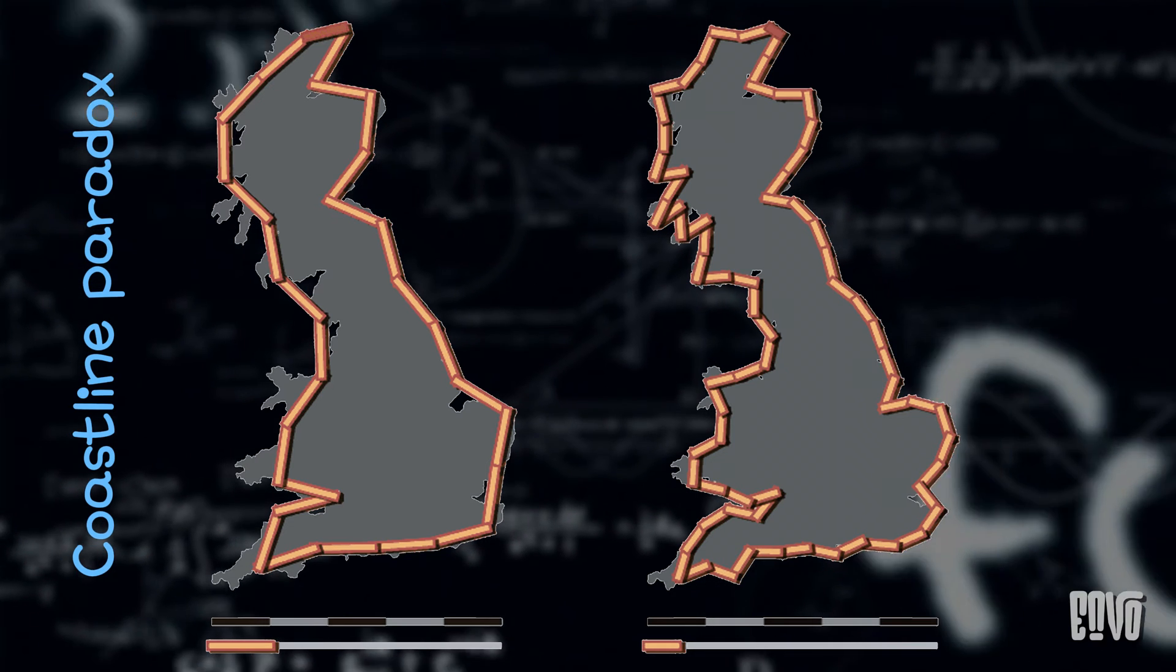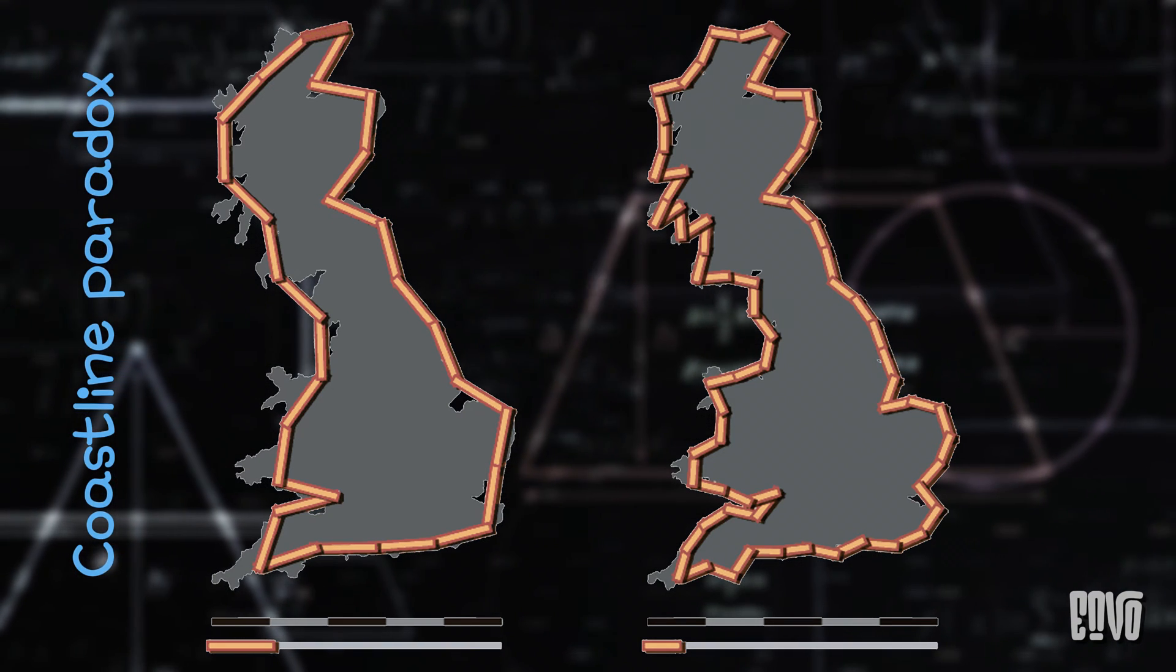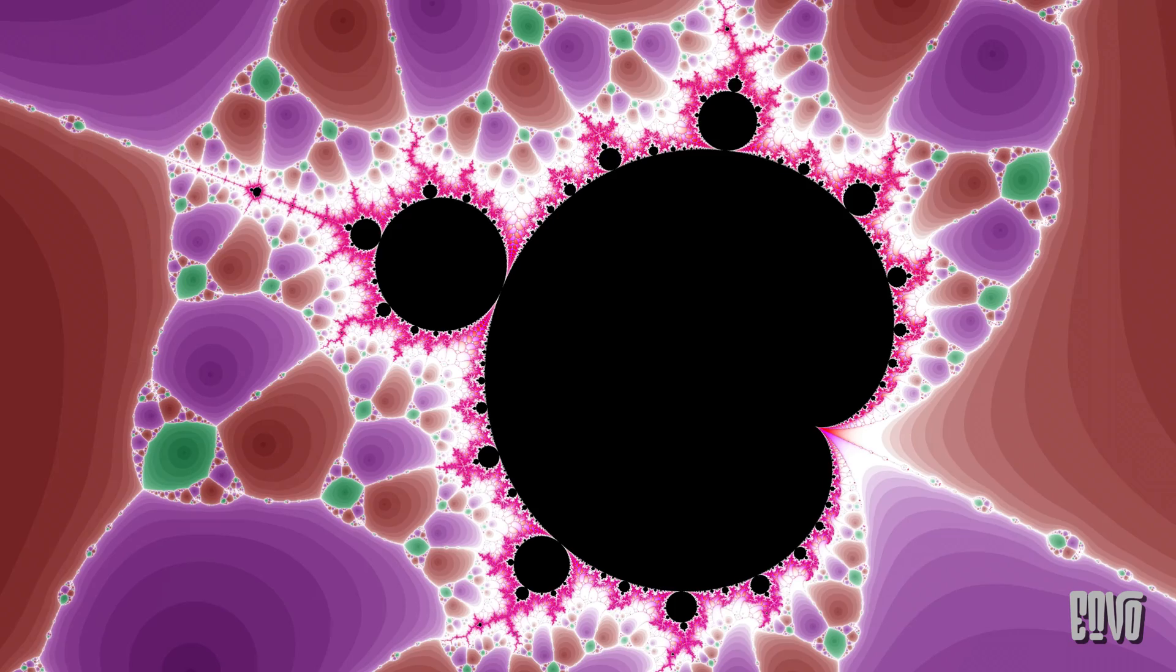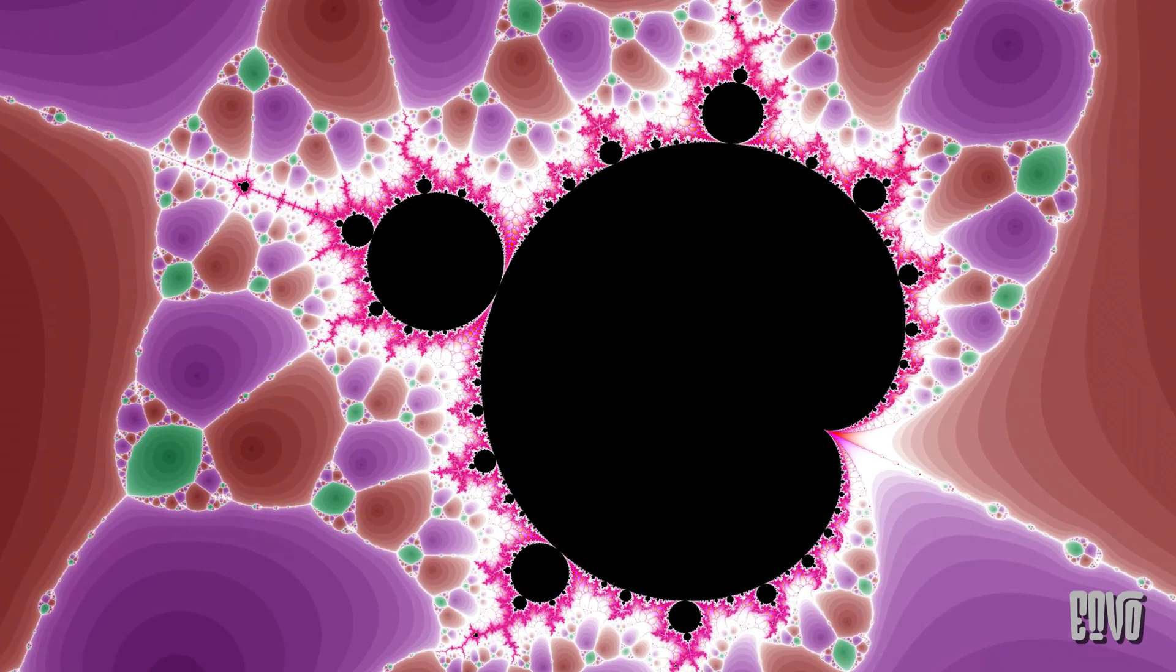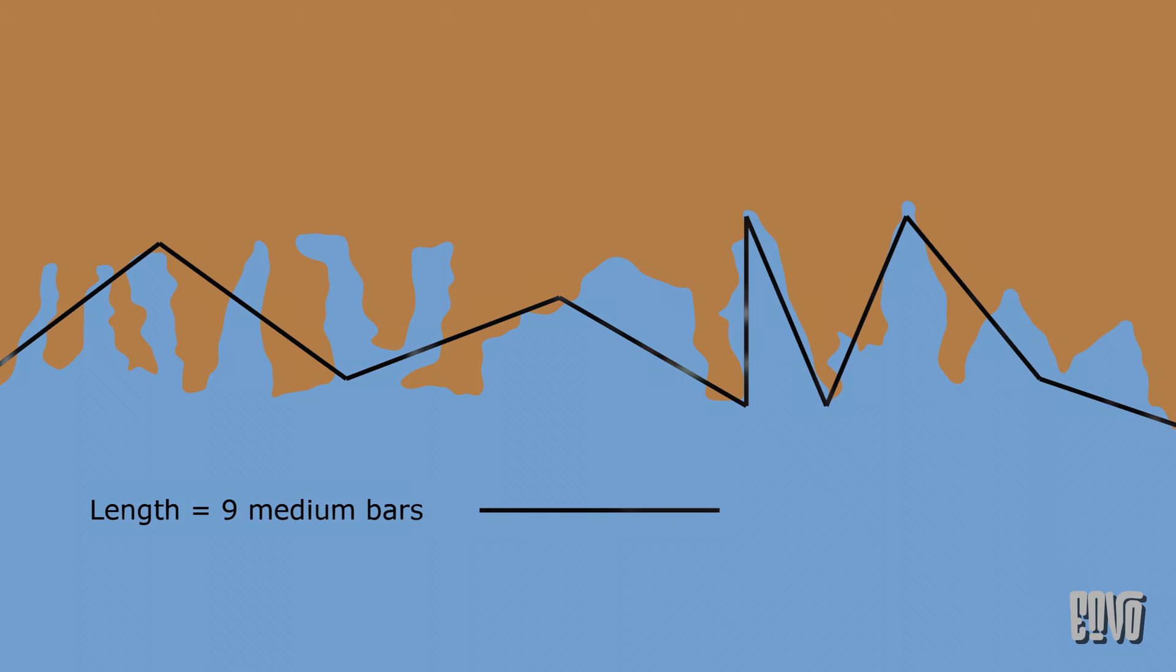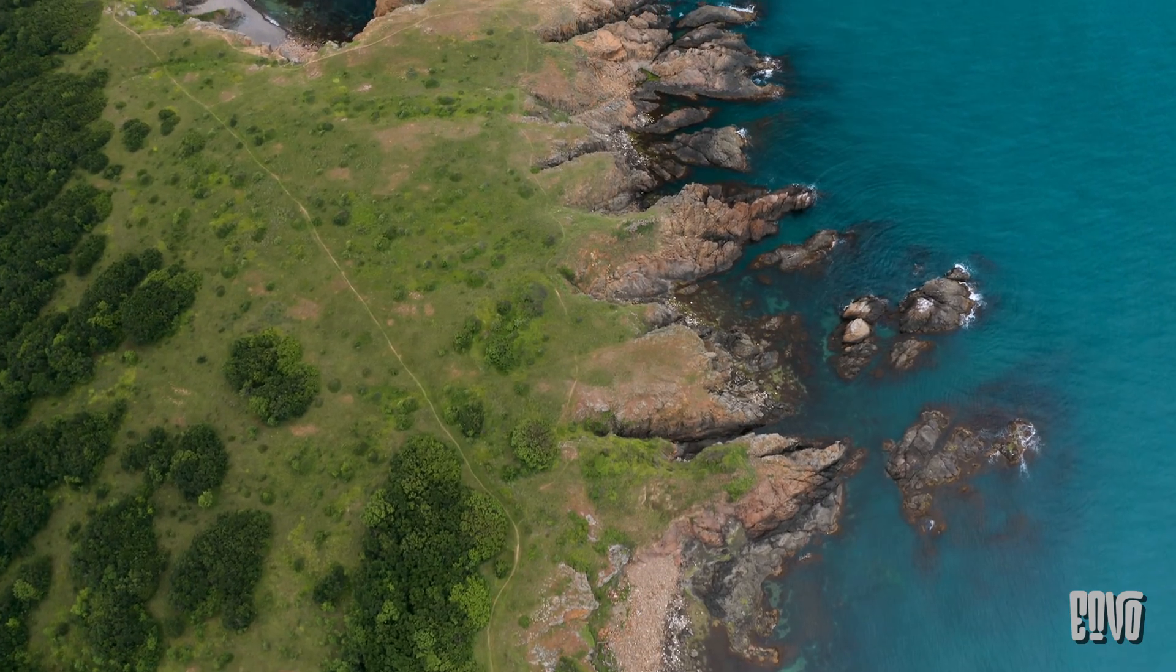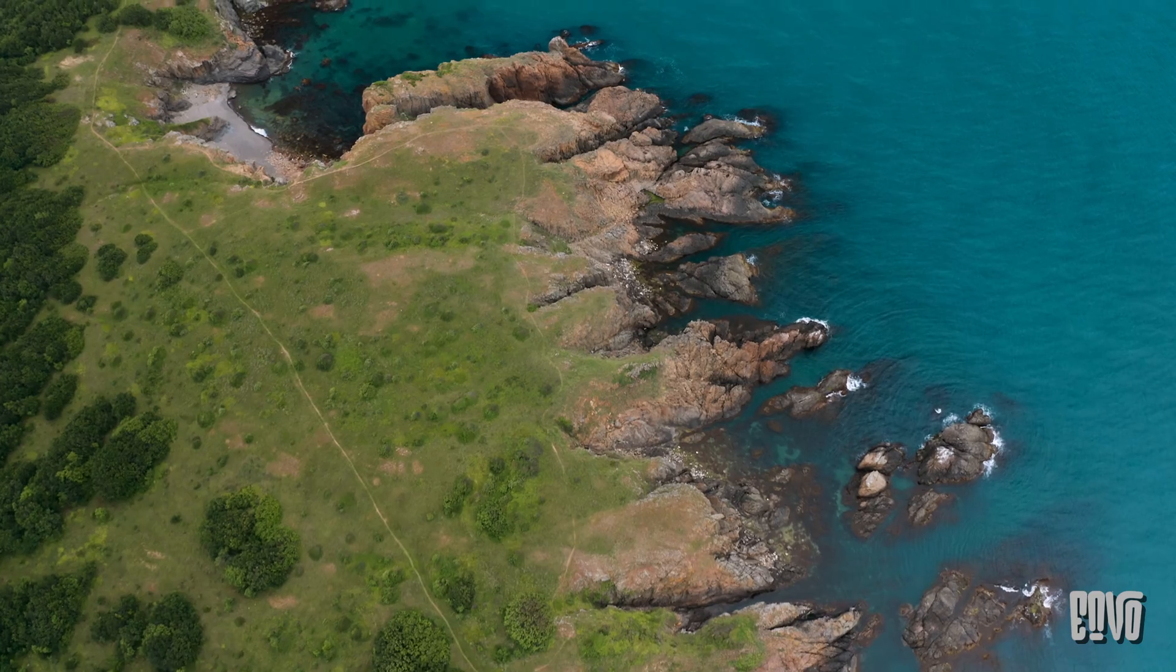Perhaps one of the most famous analogous paradoxes is the coastline paradox, popularized by the legendary mathematician Benoit Mandelbrot, the father of fractals. This paradox observes that the length of a coastline isn't well defined. Imagine trying to measure the coastline of Great Britain. If you use a long ruler, you'll get a certain length. But if you use a shorter ruler, you can measure more of the small coves, inlets, and irregularities, and the measured length will increase. As you use infinitesimally smaller and smaller measuring units, the length of the coastline appears to increase without limit.